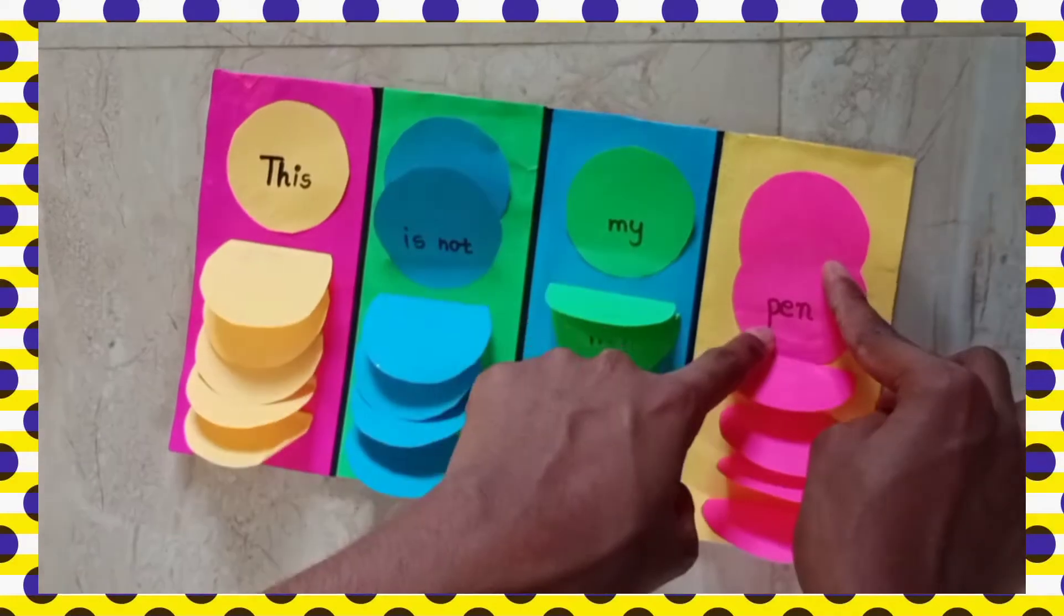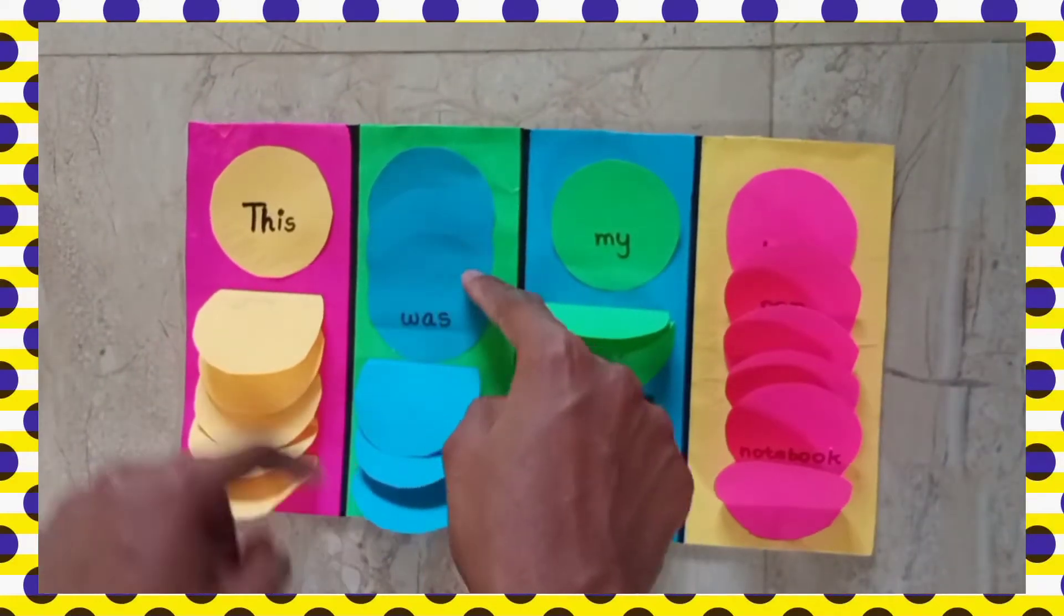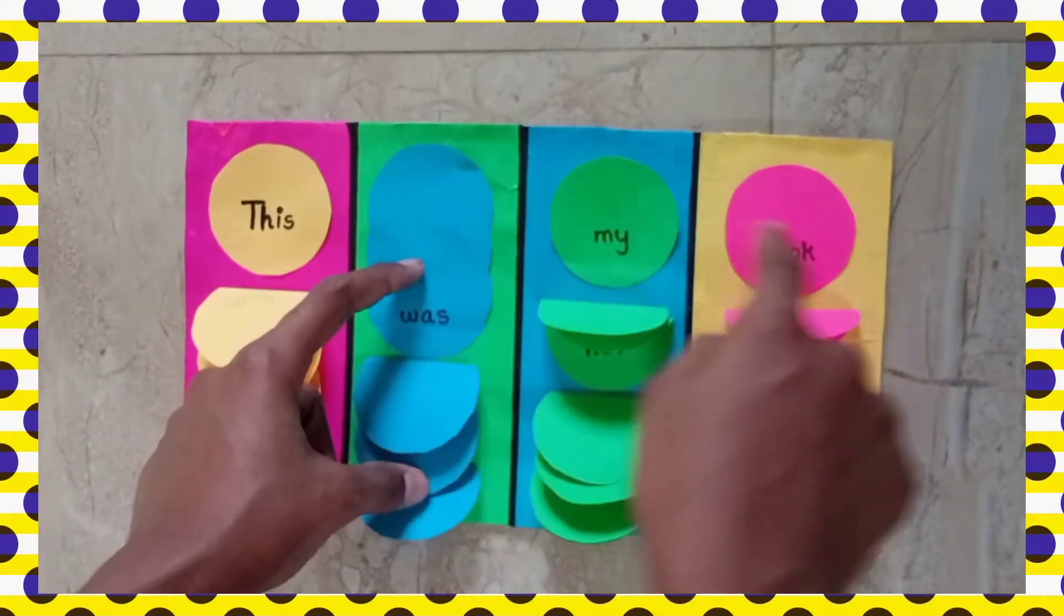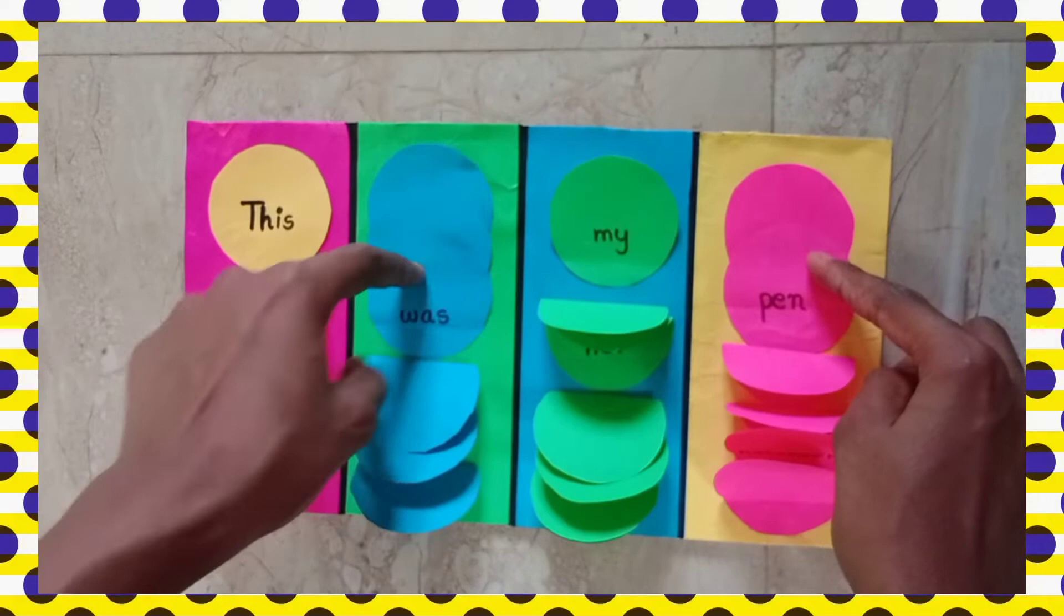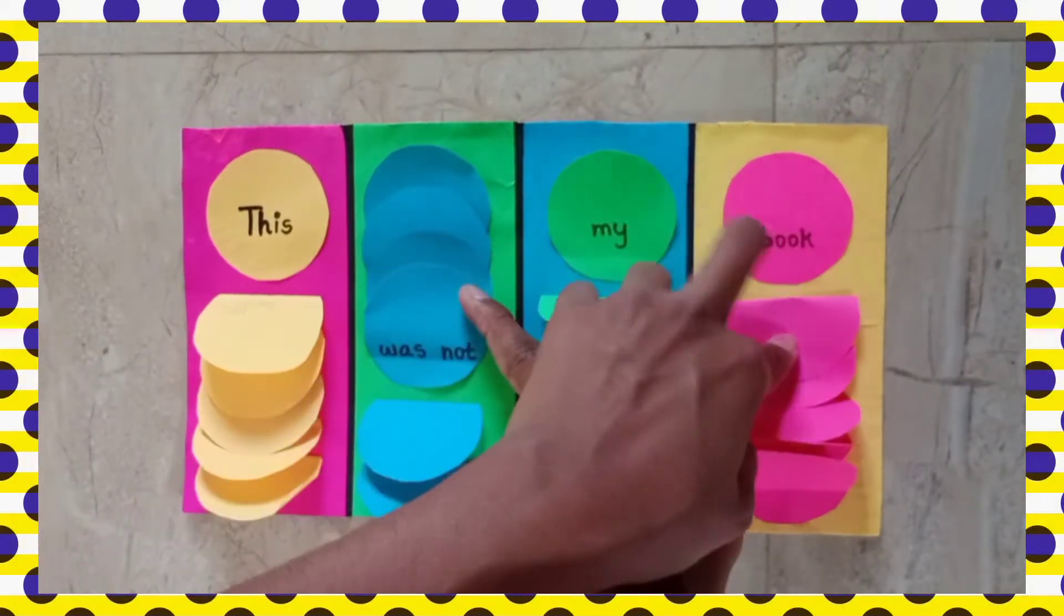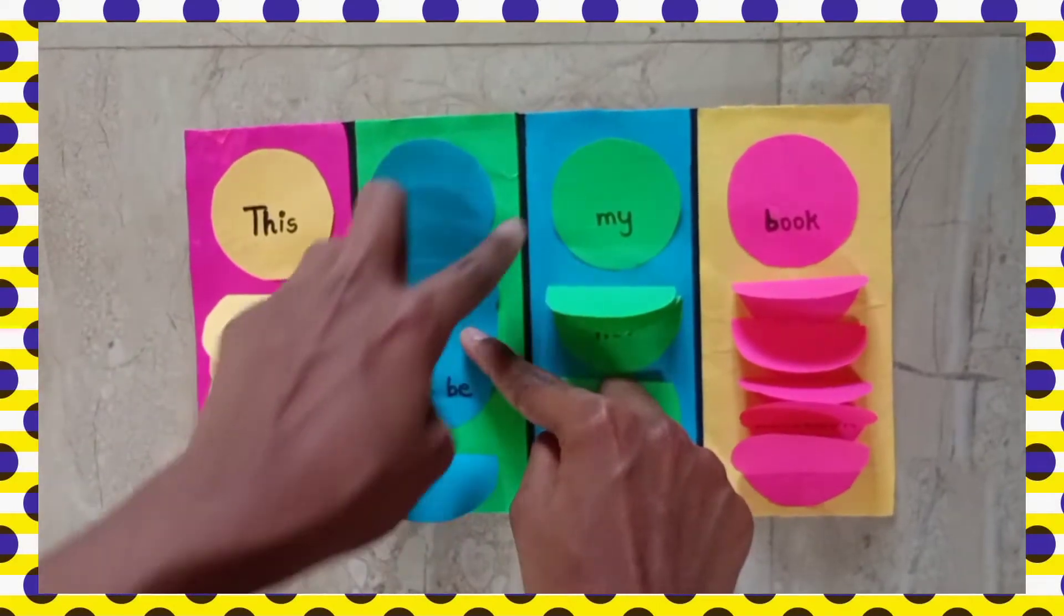Like this, for every word: This was my book. This was not my pen. Like that, we can change. This will be my book.